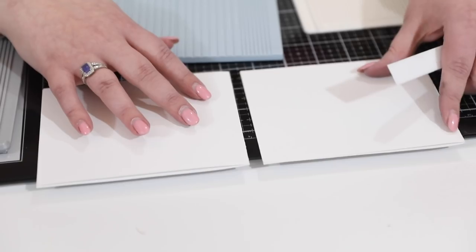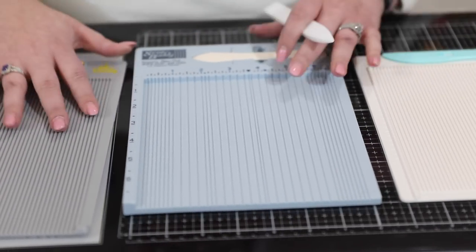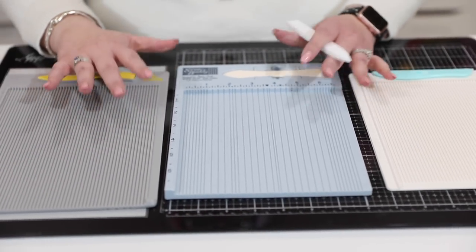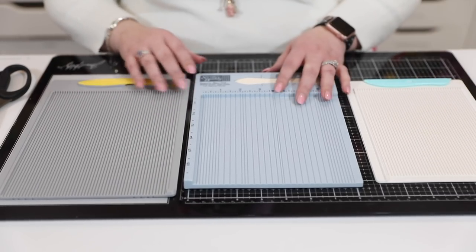A scoreboard is going to give you a nice crisp professional fold. It's going to give you a flatter card. It just gives you a much nicer finish. They're also great if you want to make things like boxes and things like that. You're going to be able to make those scores in there. So let's look at the EK and the We R ones first.